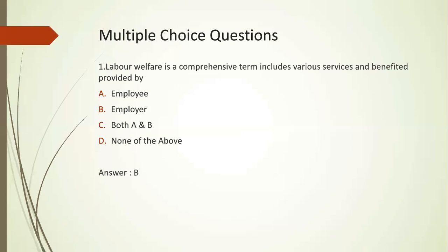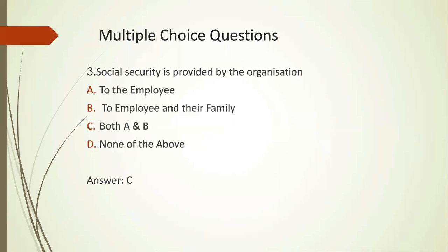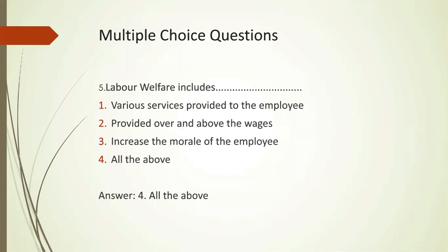I have prepared a few questions. The first one: labor welfare is a comprehensive term that includes various services and benefits provided by the employer. The objectives of labor welfare are to provide better life and health to the worker, to make the worker happy and satisfied, and to relieve workers' fatigue — so the answer is all of the above. Social security is provided by the organization both to the employee and to the family member. Employee welfare aims at economic development. Labor welfare includes various services provided to the employee over and above the wages, which in turn results in an increase in the morale of the employees.